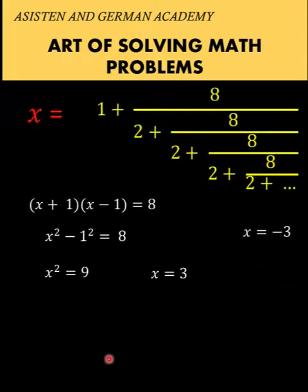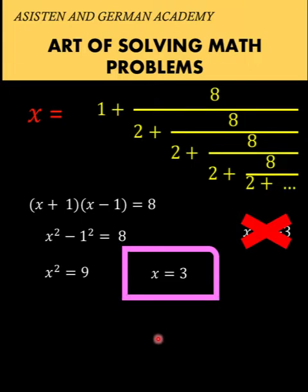But going back to our problem, clearly the value of this expression at the right hand side is positive because you have positive 1 and that is added by all these positive numbers. There is no way for this expression to become negative. And so one of the roots x equals negative 3 must be an extraneous root. So let's disregard this root. And so our final answer is only x equals positive 3 for the value of this expression.